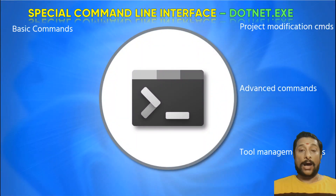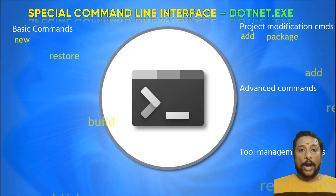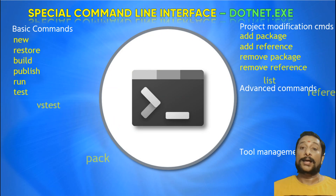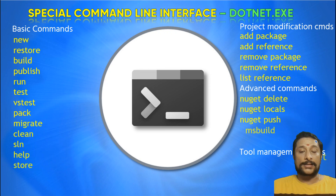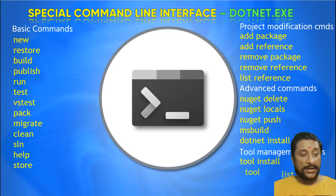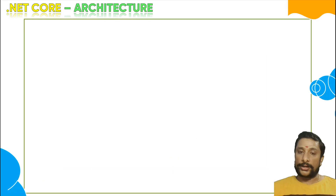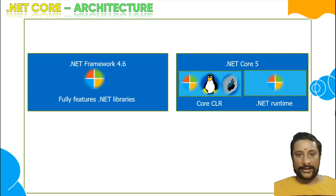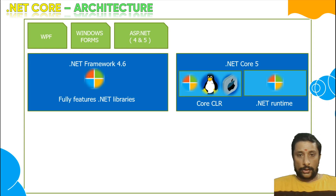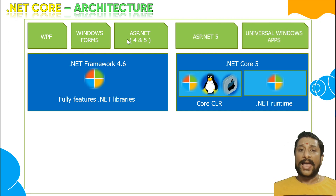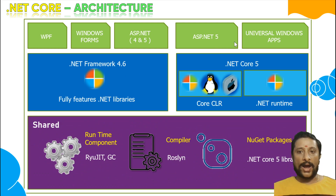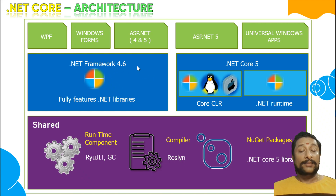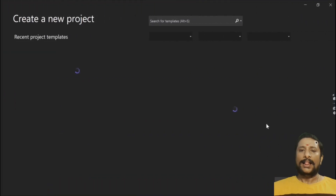Every application will need specific libraries, so it depends on the application — that concept is called fragmentation. .NET Core has a specialized command line interface called dotnet.exe, which makes the entire processing system very fast. In the upgraded .NET architecture, you can create WPF, Windows Forms, and ASP.NET via .NET Framework, whereas ASP.NET 5 and Universal Windows apps can be created with .NET Core, which has compatibility with multiple operating systems. Both share runtime components, compilers, and NuGet packages.